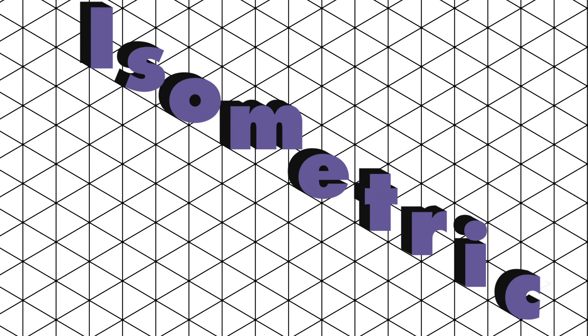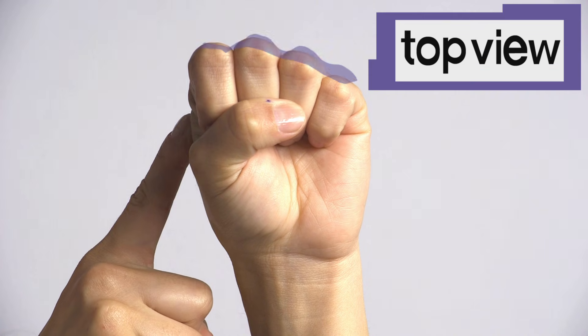I want to talk about a really cool technique called isometric sketching. An isometric sketch is a 3D drawing of an object where you can see all three views: the front, the side, and the top.